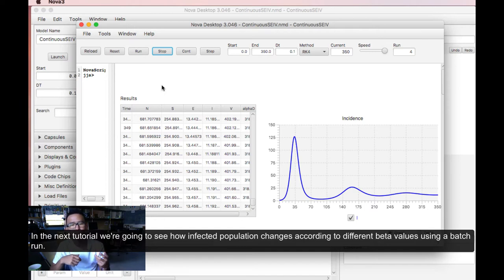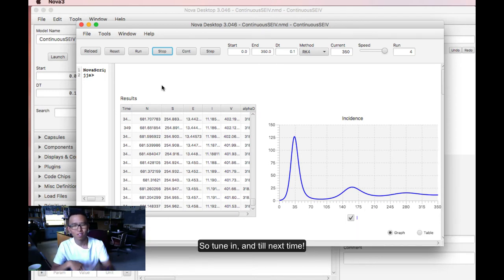In the next tutorial we're going to see how infected population changes according to different beta values using a batch run. So tune in. Until next time.